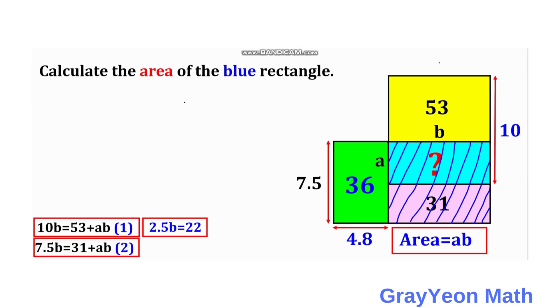Next is we use equation 1, and that is 10B equals 53 plus AB. So this 10B can be written as 2.5B times 4. So 4 times 2.5B is equal to 53 plus AB.